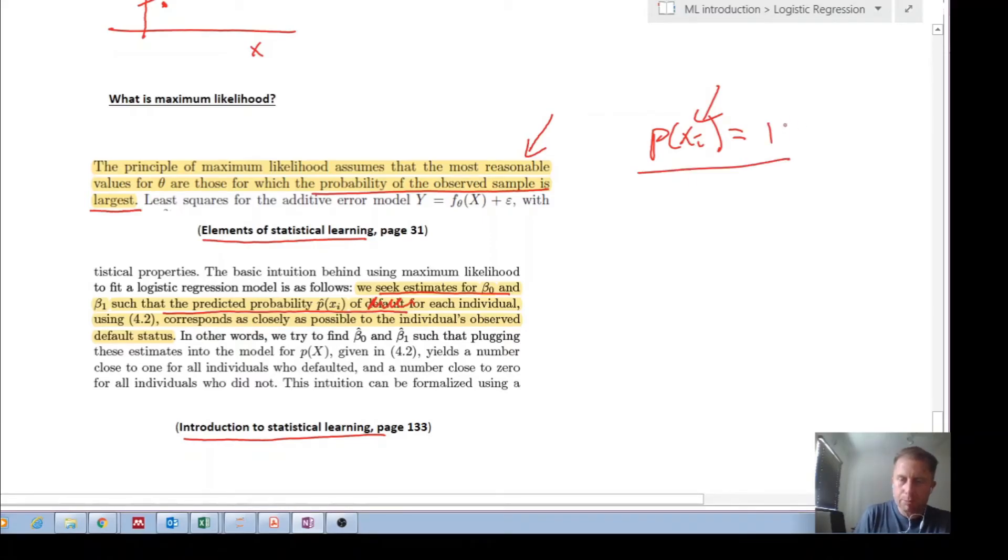This is a specific example. So just ignore that, the probability of it being one, because remember when we're talking about probability here, it is the probability of your prediction being one. So we seek beta zero and beta one such that the predicted probability of being one for each individual corresponds as closely as possible to the actual observed default status, which is exactly what I've been saying.